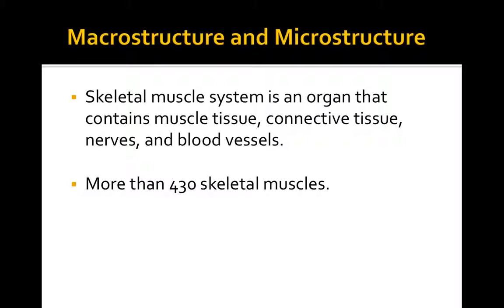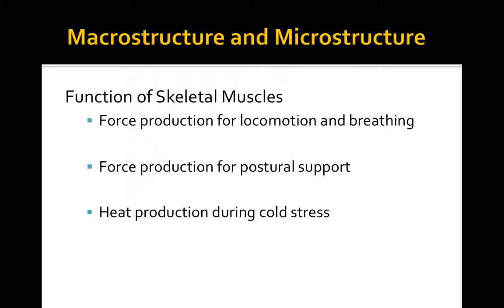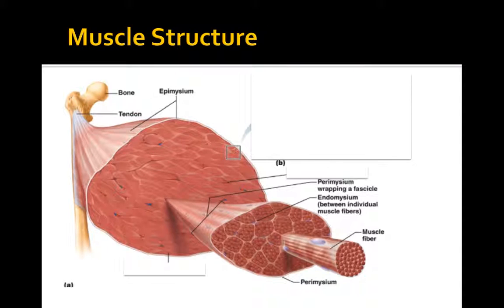There are over 430 muscles in the human body. Muscles are key for moving, but they also help with breathing, maintaining proper body position and postural support, and heat production during cold stress. Muscle is an active tissue—it requires energy, and if you have enough of it, you're increasing your resting metabolic rate, which allows you to burn more calories throughout the day.